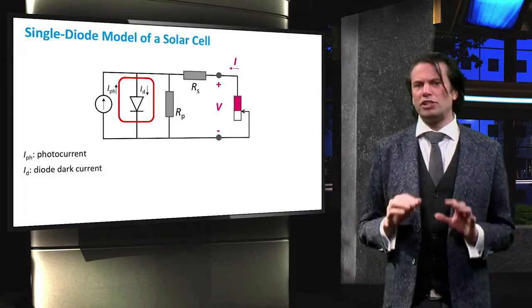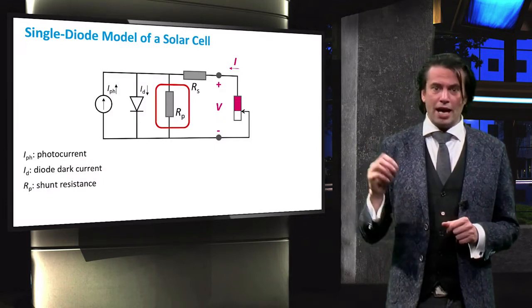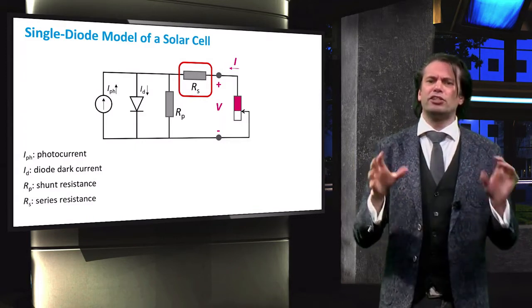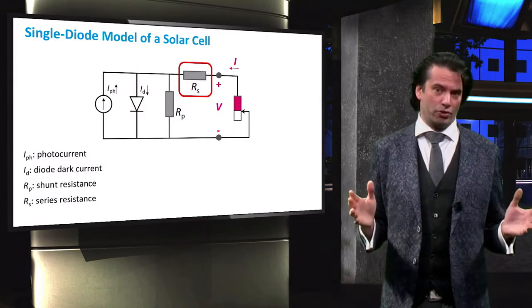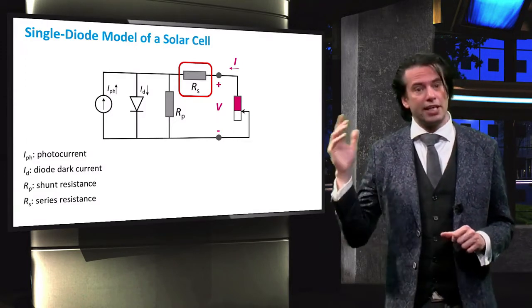Next we see two resistors, RP, the shunt resistance, and RS, the series resistance. These two resistors are there because the solar cell is not an ideal diode. We will look into the sources of these resistances in the next slide.